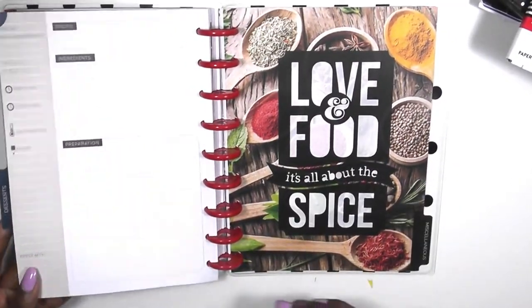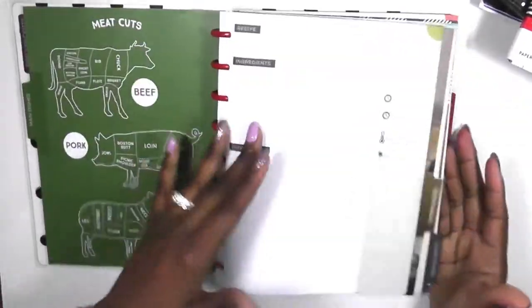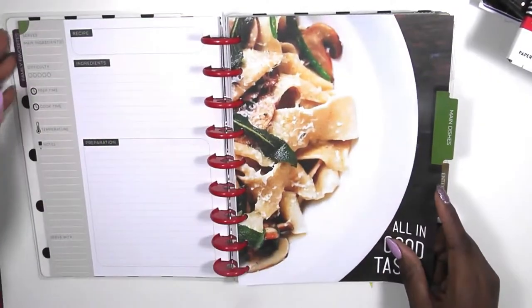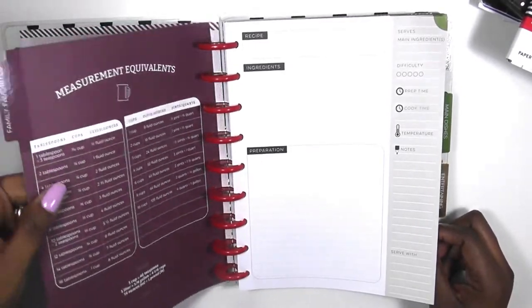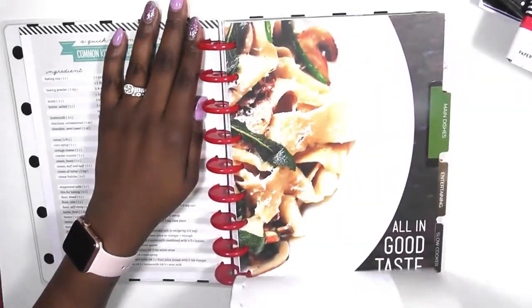Then you have miscellaneous. Love and food is all about the spice, that is so cute. Okay guys, I had to look at this planner and really figure out what I wanted to do for myself. One of the things that was missing for me was sides, so I decided to rearrange some of my dividers.